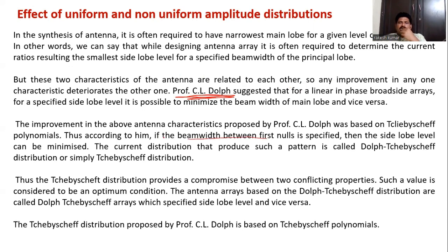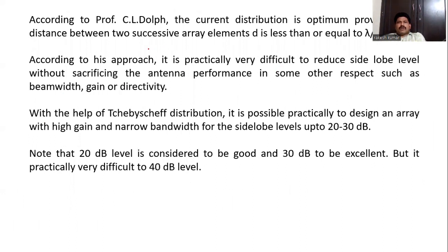According to him, the beam width between first nulls is specified. If you specify the beam width between first nulls, then the side lobe levels can be minimized. The current distribution to produce such a pattern is called the Dolph-Chebyshev distribution, and antenna arrays based on it are called Dolph-Chebyshev arrays. He stated that it is practically very difficult to reduce the side lobe level without sacrificing antenna performance in other aspects such as beam width, gain, or directivity. A 20 dB side lobe level is considered good and 30 dB excellent, but 40 dB is practically very difficult to obtain.